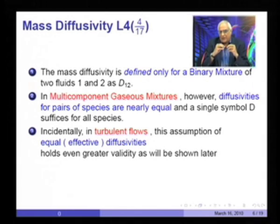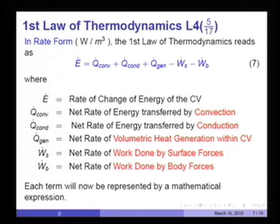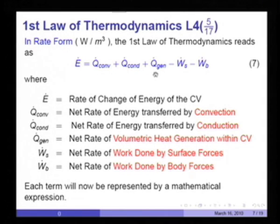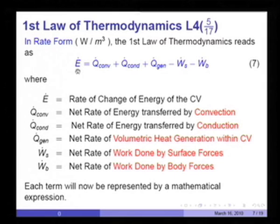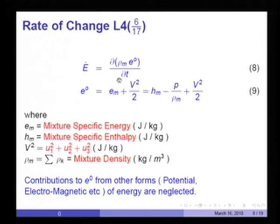We now turn to the first law of thermodynamics. In rate form (watts per cubic meter), the first law reads: dE/dt = dQ_convection/dt + dQ_conduction/dt + rate of generation of energy − work done by shear forces − work done by body forces. The first term, E-dot, is simply d/dt of (ρ_m · e₀), the total energy. The total energy is the sum of static energy plus kinetic energy; the static thermodynamic energy is enthalpy minus p/ρ_m, plus V²/2.